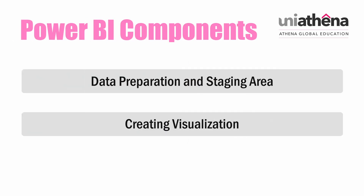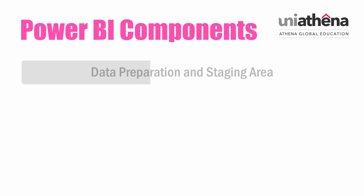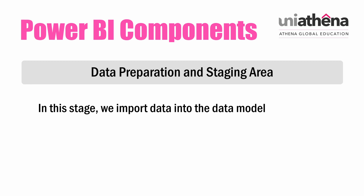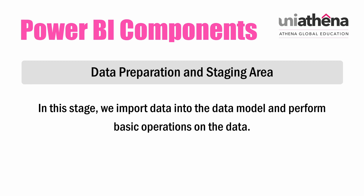Let us look at the major components of Power BI Desktop. There are two major components. Number one: Data Preparation and Staging Area. In this stage, we import data into the data model and perform basic operations on the data.